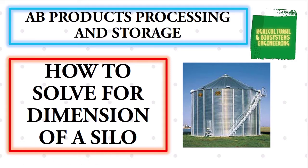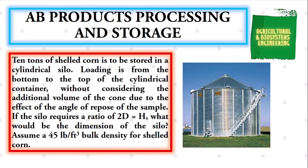This time, we will be solving this problem. 10 tons of shelled corn is to be stored in a cylindrical silo. Loading is from the bottom to the top of the cylindrical container, without considering the additional volume of the cone due to the effect of the angle of repose of the sample. If the silo requires a ratio of 2d equals h, or twice the diameter is equal to height, what would be the dimension of the silo? Assume a 45 pounds per cubic feet bulk density for shelled corn.